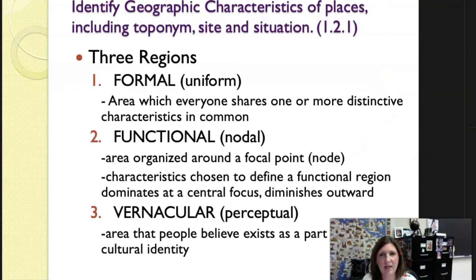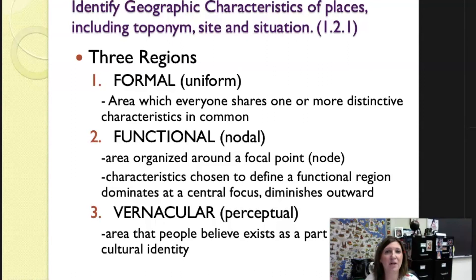I want to focus on vocabulary for the three different types of regions: formal, functional, and vernacular. Formal is sometimes called a uniform region. Functional is sometimes called a nodal region. Vernacular is sometimes called a perceptual region. A formal region is an area where everyone shares one or more distinctive characteristics in common. A functional region is an area organized around a focal point or node — the characteristic dominates at a central focus and diminishes outward. An example of functional would be fans of the Baltimore Ravens: the further you get from Baltimore, the fewer fans you have. A vernacular region is an area that people feel is part of their cultural identity.